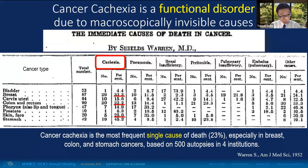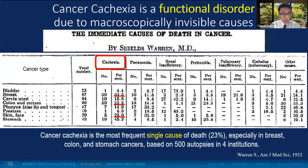Inquiry into the causes of cancer cachexia has continued for a long time. In 1932, Sears Warren, a pathologist at Harvard University, summarized the results of 500 autopsies to find the immediate cause of cancer death. He found that one-fifth of cancer patients died of cancer cachexia without visible evidence of infection, hemorrhage, or thrombosis. So cancer cachexia is a functional disorder due to macroscopically or radiographically invisible causes.